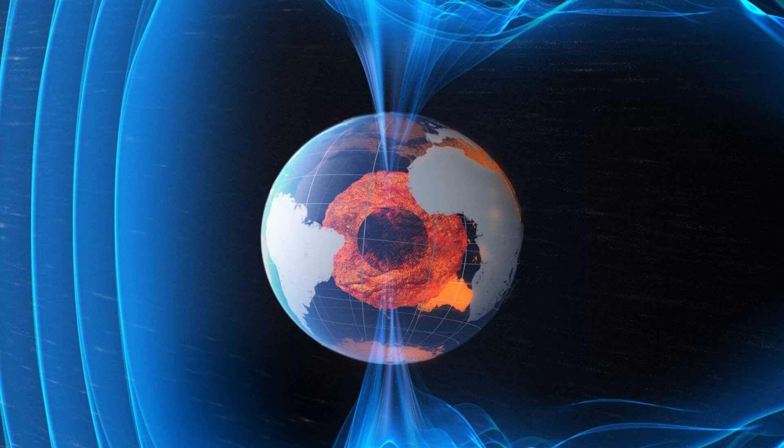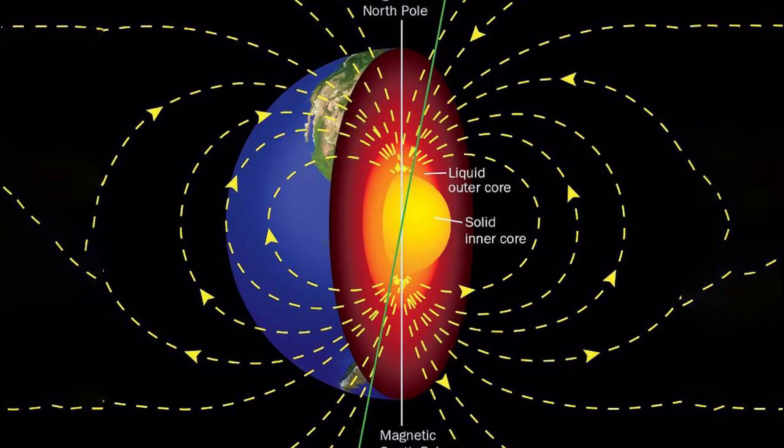As the Earth's core gradually cools, the liquid outer core slowly solidifies and crystallizes into the inner core. This crystallization process releases latent heat. Latent heat is the energy released or absorbed during a phase change. As the liquid iron in the outer core solidifies, it releases heat, contributing to the overall heat within the core.